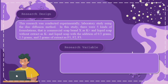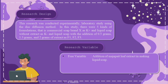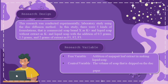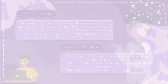Research Variables: The free variable is the addition of Majapite leaf extract in making liquid soap. The control variable is the volume of soap dropped on the disc paper, which is 0.1 milliliter. The dependent variable is the clear zone around the disc paper.